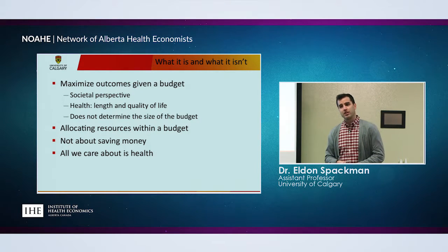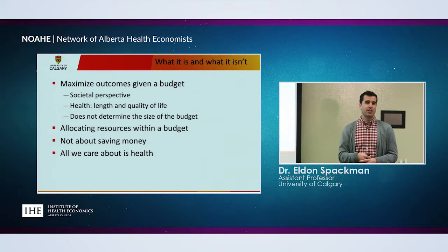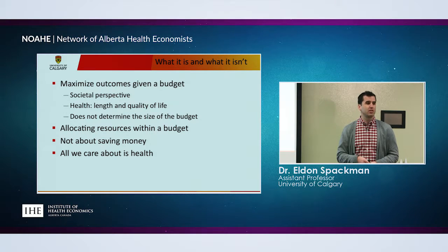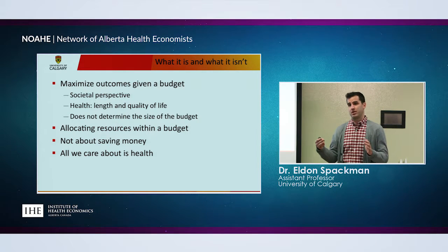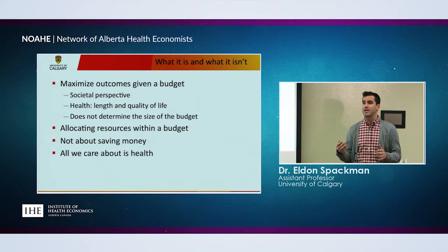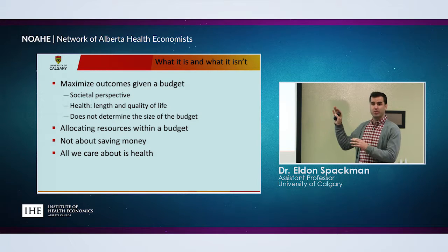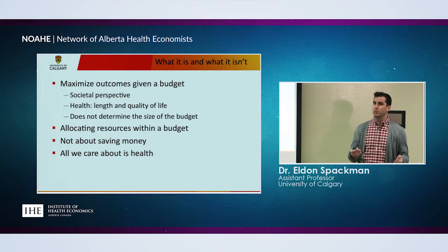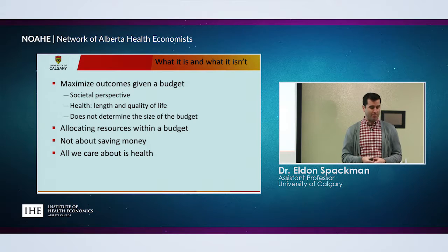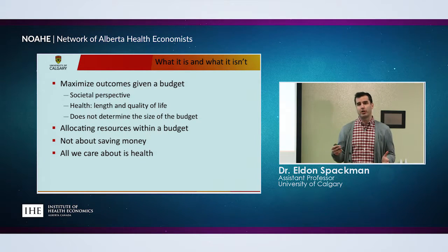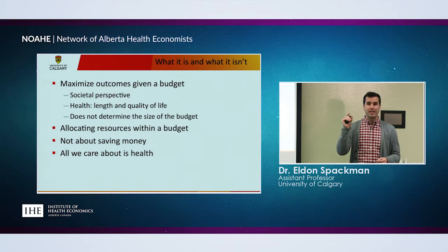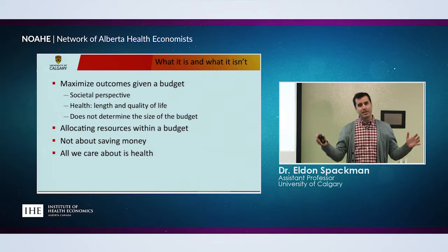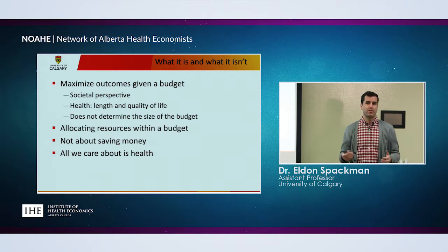When we talk about economics, we're thinking about scarcity — that we can't have everything that we want. In the current climate, that's pretty clear. Oil is not booming. There's this pressure to save money, to do less. And that's possible and still have value for money — to do less and have value for money. The reason is because what we're trying to do is maximize a given budget, and do the best thing we can with that budget from a societal perspective.